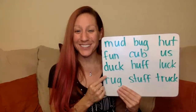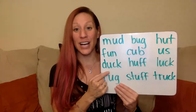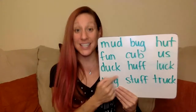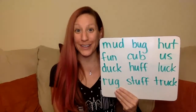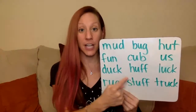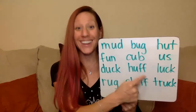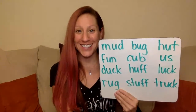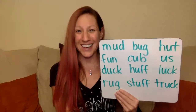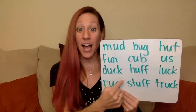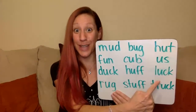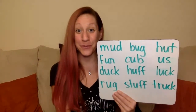Next row: d-uh-ck: duck. Remember, CK makes one 'ck' sound. H-uh-ff: huff. And FF — two of the same consonant together — makes one sound also. Huff. Can you do this last one in this row on your own?